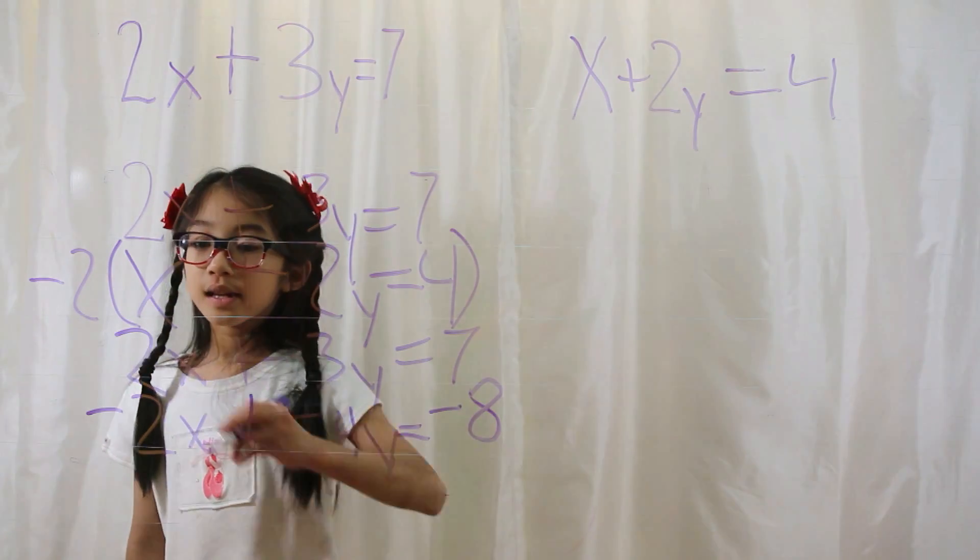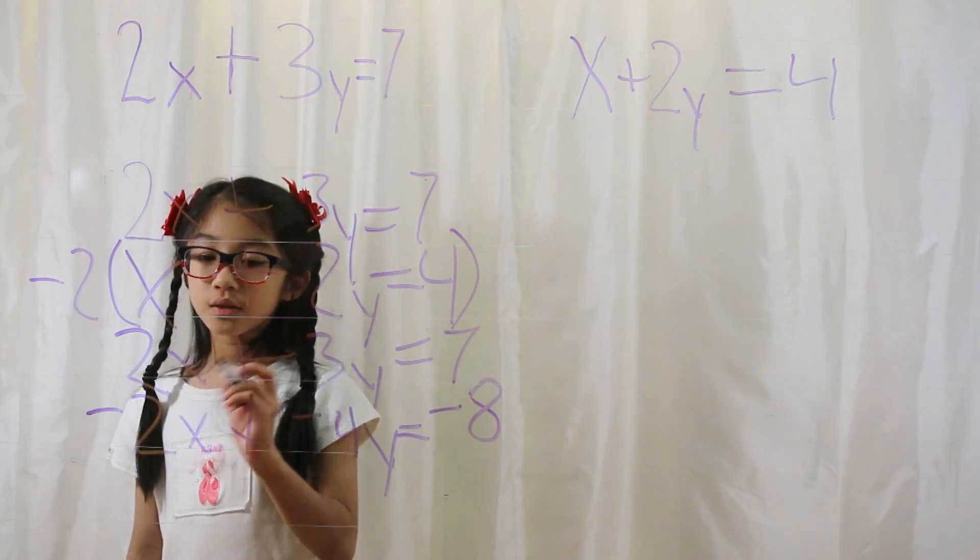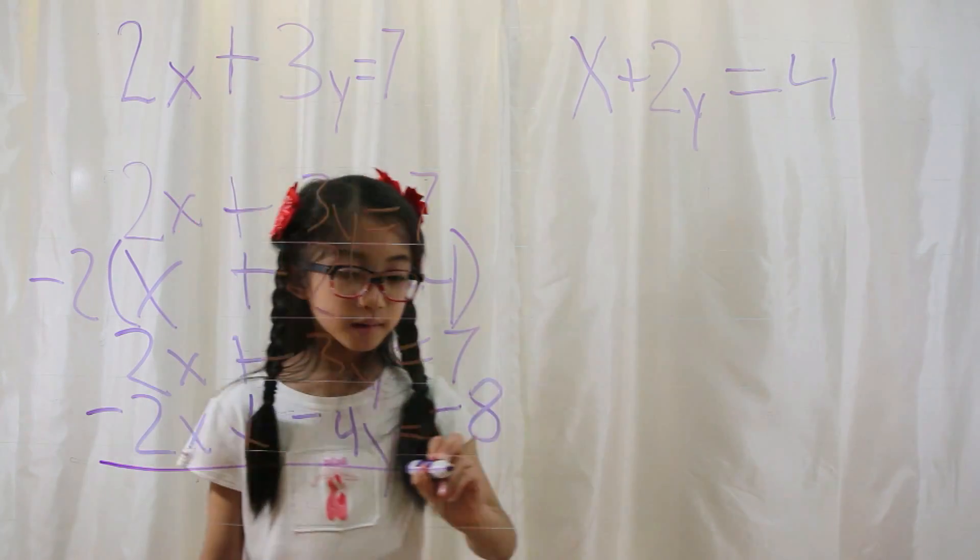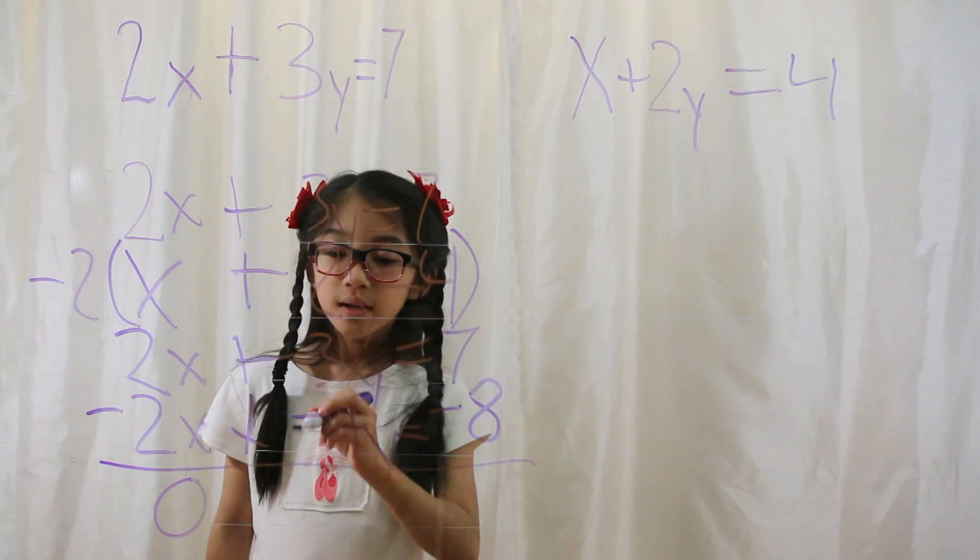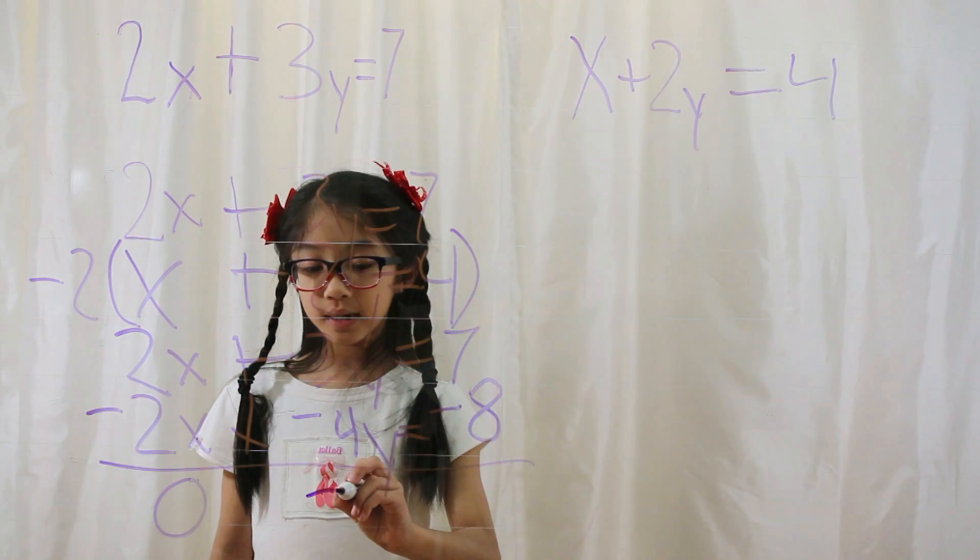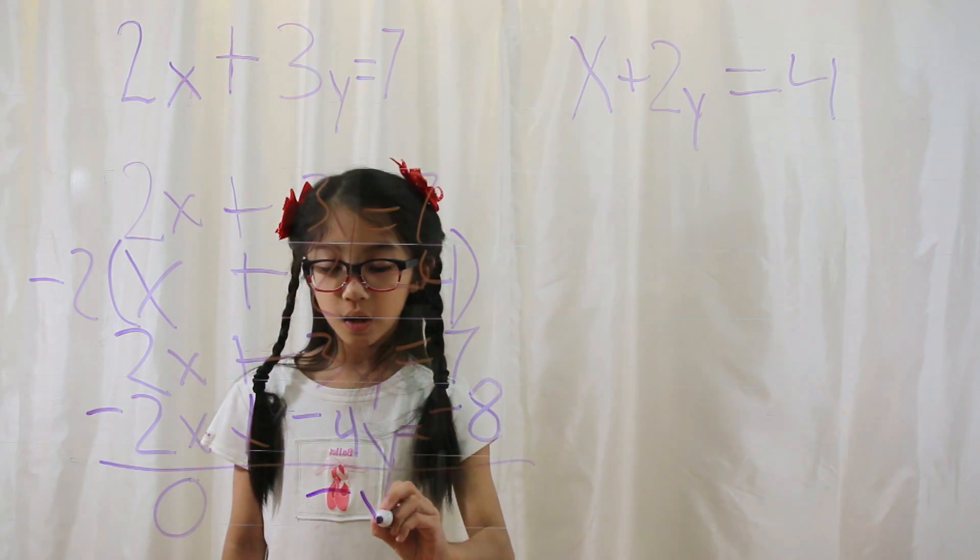Now you subtract. 2x minus 2x equals 0. 3y minus 4y equals negative y.